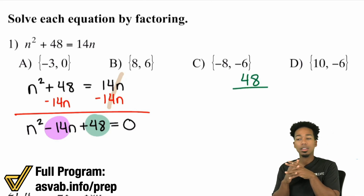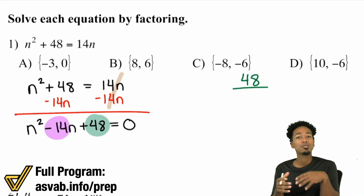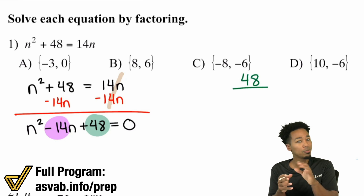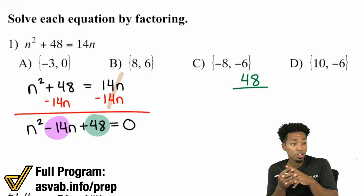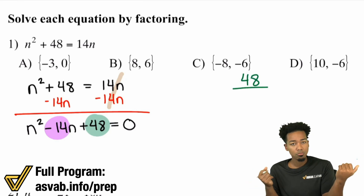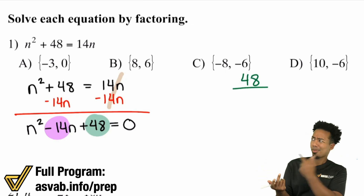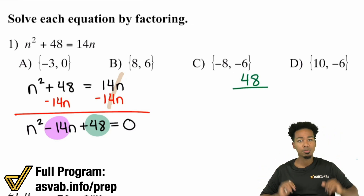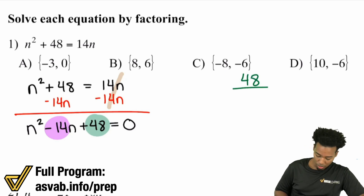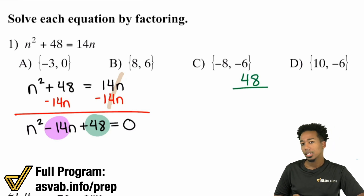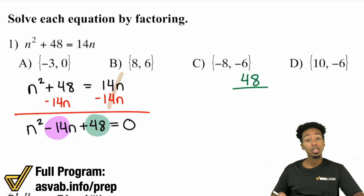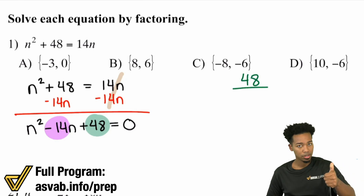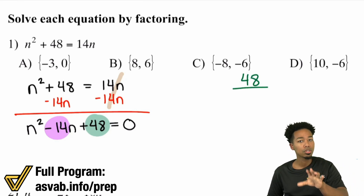We have to ask ourselves a quick question. How do we multiply to get a positive 48? They're either both going to be positive or both going to be negative — there's no way you can multiply opposite signs and get a positive number. Now when you look at the middle number, negative 14, they have to add up to negative 14. Can you add two positives to get negative 14? No. Can you add two negatives to get negative 14? Yes. So both of the numbers you're going to use are negative.